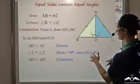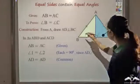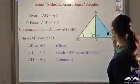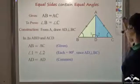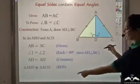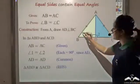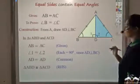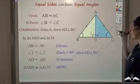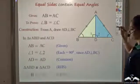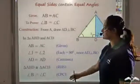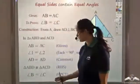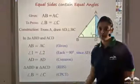So the triangles are congruent, and hence all corresponding parts would also be equal. I can say that angle B would be equal to angle C. Since the triangles are congruent by RHS, angle B is equal to angle C by CPCT. This is what I wanted to prove, and hence I have proved it.